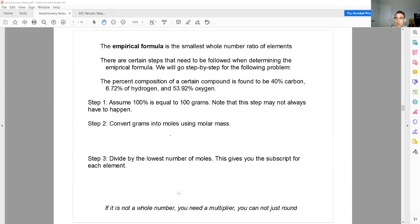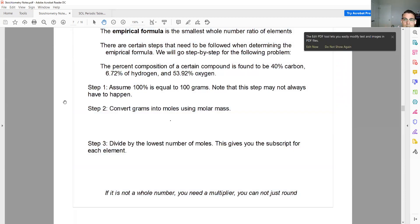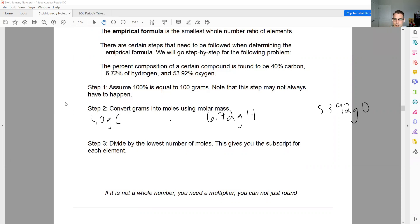Step one, we're going to assume that 100% is equal to 100 grams so that I can start with grams. Sometimes you'll be given grams to start with, and then you don't have to worry about step one. But I'm going to assume that 100% is equal to 100 grams, so that's going to be 40 grams carbon. That's going to be 6.72 grams hydrogen, 53.92 grams oxygen. And it's just H because this is within a compound.